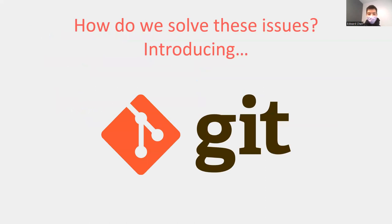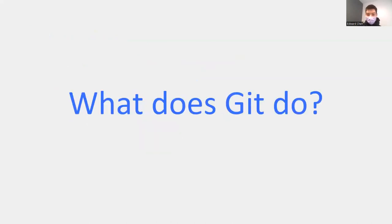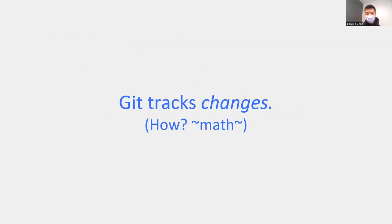So how do we solve these issues? We use something called Git. To introduce Git more thoroughly, we're going to talk about what it does. It basically tracks changes being made to a set of files through something we'll call a diff.